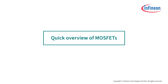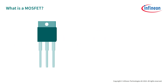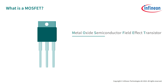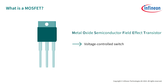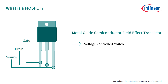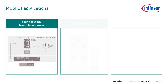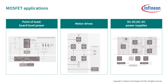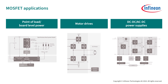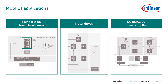First, we will give you a quick overview of MOSFETs. A MOSFET, or Metal Oxide Semiconductor Field Effect Transistor, is a semiconductor device that is typically used as a voltage-controlled switch. It comprises three terminals: the gate, the drain, and the source. The main purpose of this transistor is to efficiently deliver power to a load. The MOSFET has several application cases, such as point-of-load or board-level power, motor drives, DC-DC and AC-DC power supplies, among others. There are multiple applications and with each application, multiple MOSFET combinations are possible.